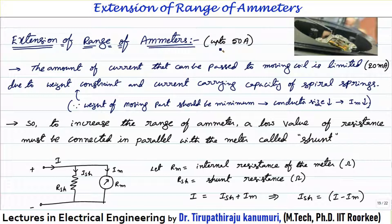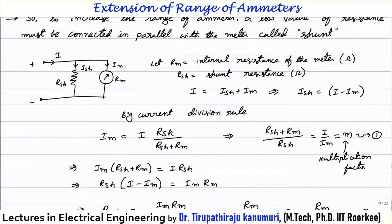By using the shunt we can extend the range of the instrument up to about 50 amperes. If you want to increase beyond this limit, we generally use a current transformer — also called an instrument transformer — to step down the current. This has already been discussed in the instrument transformers and measurements playlists.